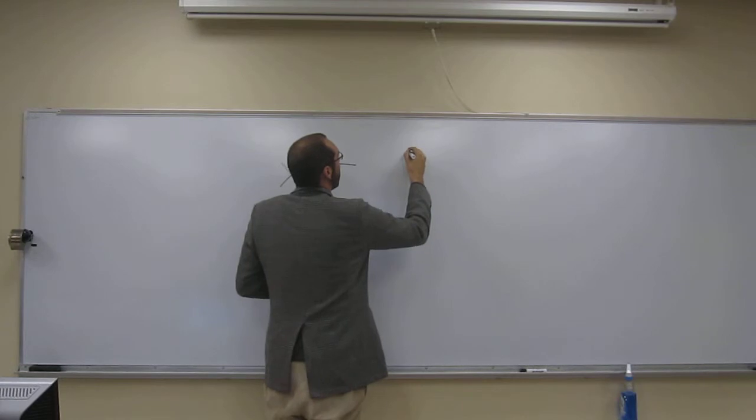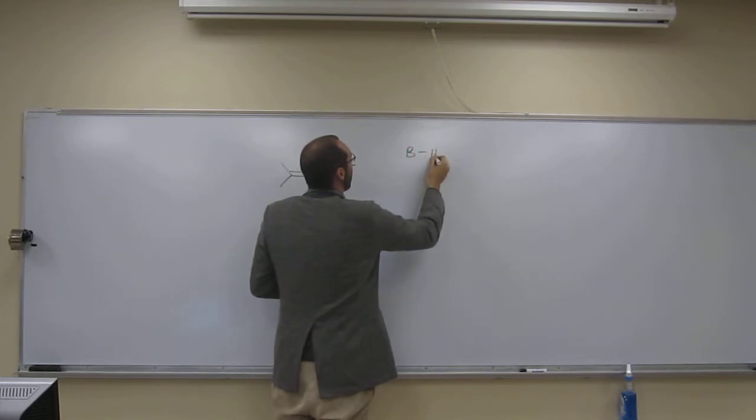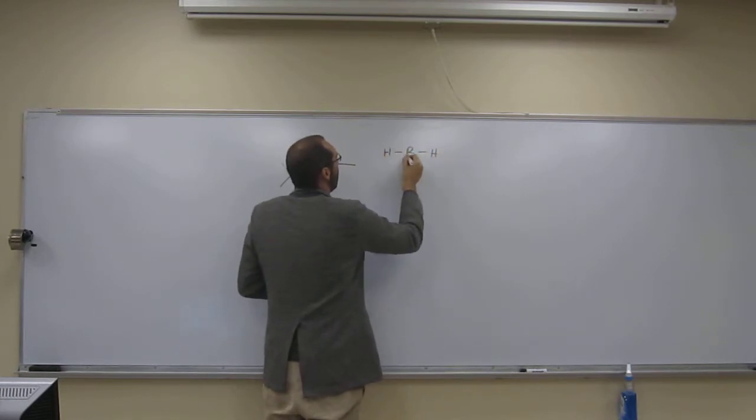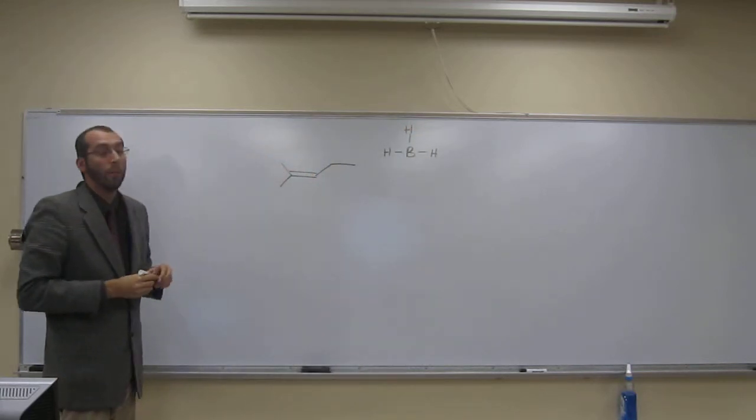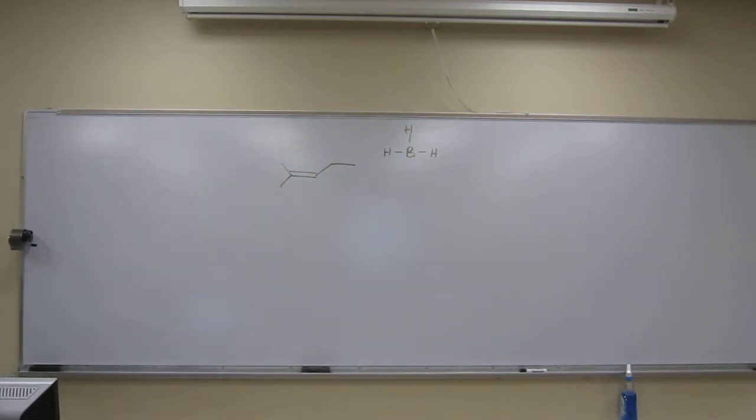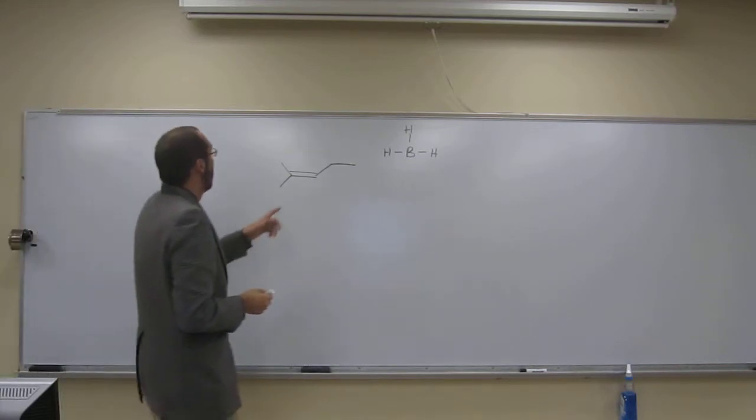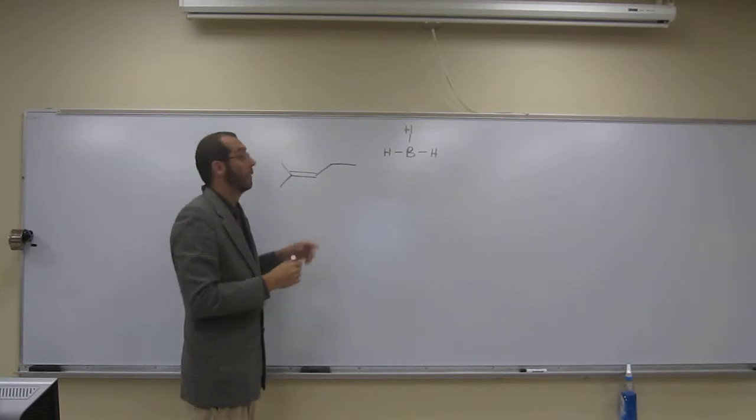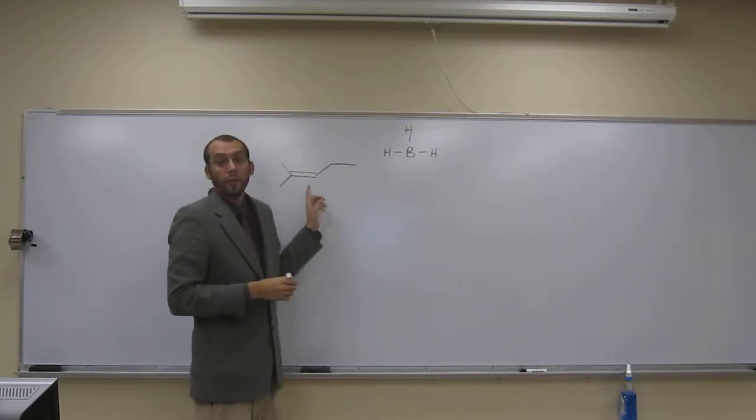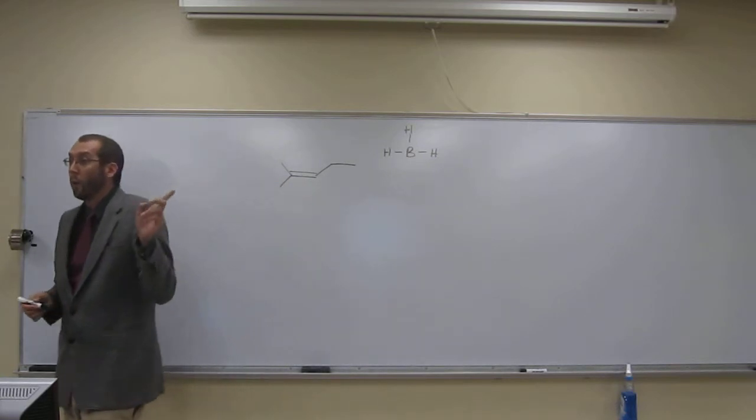So BH3, remember that the boron is less electronegative than the hydrogen is. So it's going to add anti-Markovnikov. The nucleophile is actually going to be the double bond here. So the boron is going to add to the side with the more hydrogens.